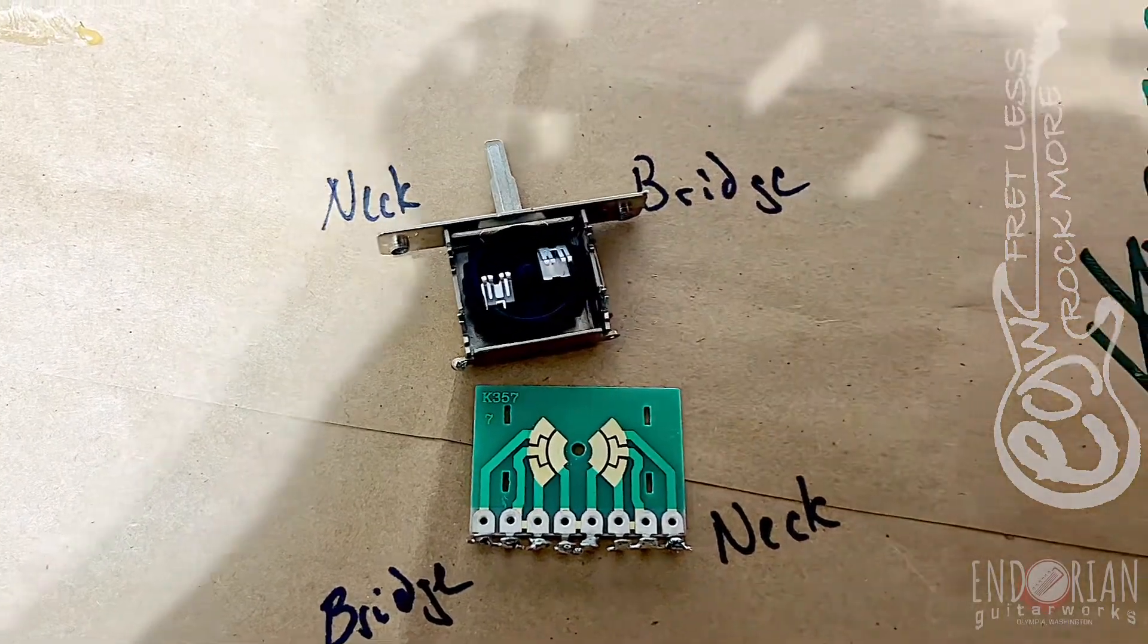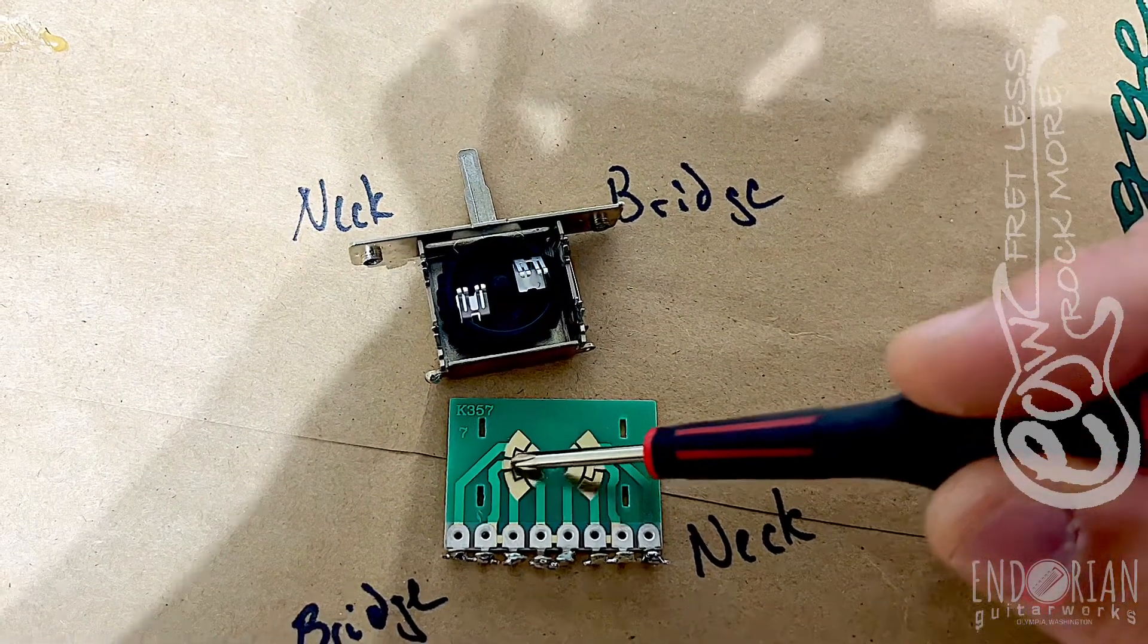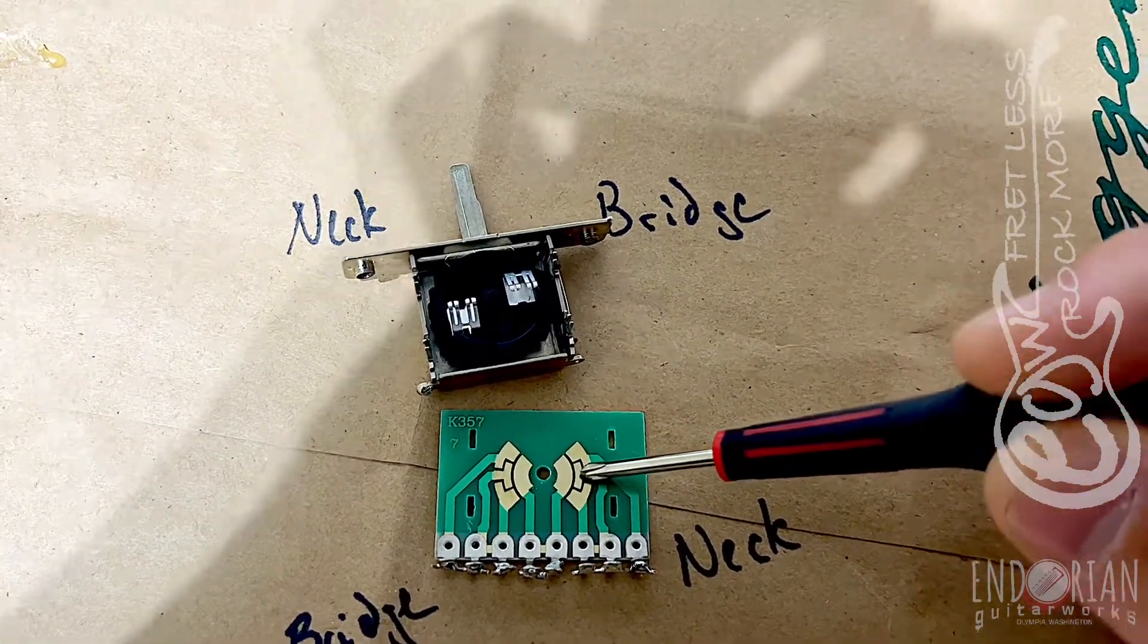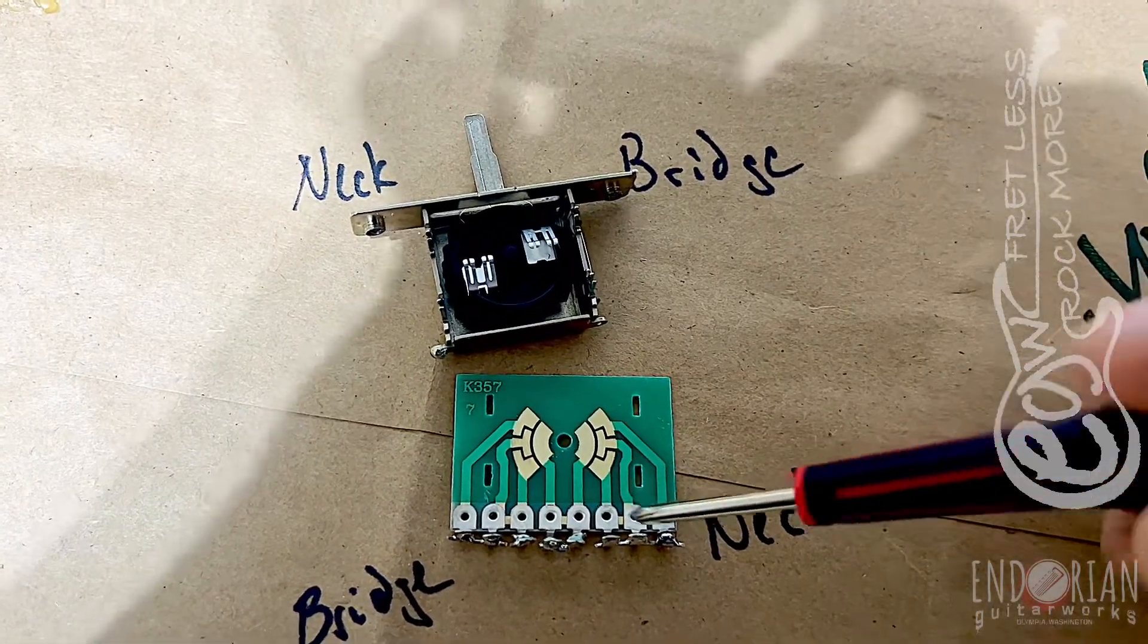In the middle position, you've got contacts being jumped from this side to this side and from this side to this side. So naturally, we want to pick up both the neck and the bridge pickup here.